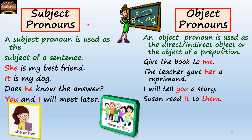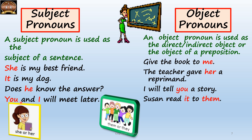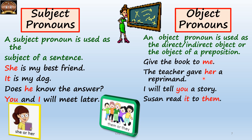Let's take examples. A subject pronoun is used as the subject of a sentence: 'She is my best friend.' 'It is my dog.' 'Does he know the answer?' 'You and I will meet later.' For object pronouns — used as direct object, indirect object, or object of preposition: 'Give the book to me' — indirect object. 'The teacher gave her a reprimand' — indirect object. 'I will tell you a story' — indirect object. 'Suzanne read it to them' — here 'it' is the direct object and 'them' is the indirect object.